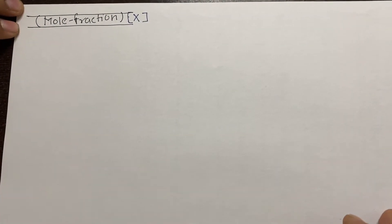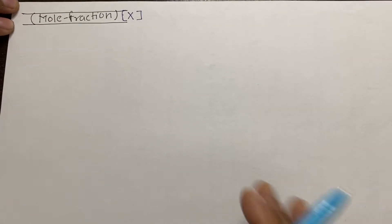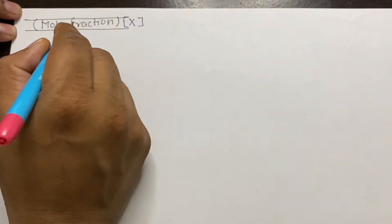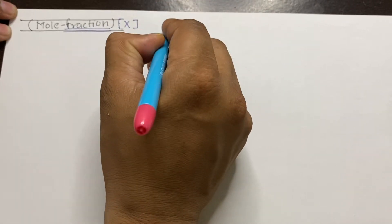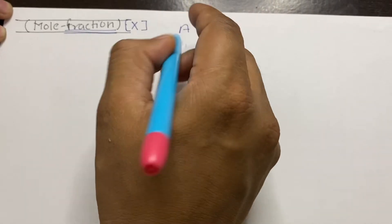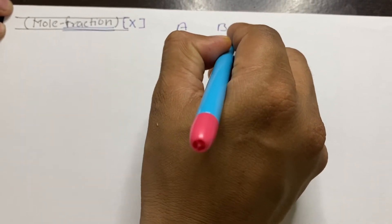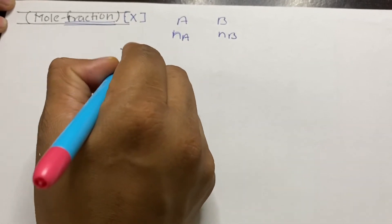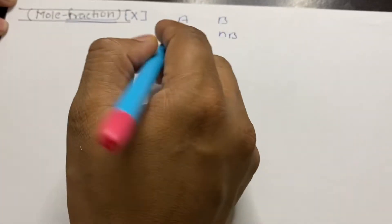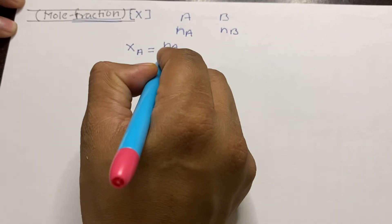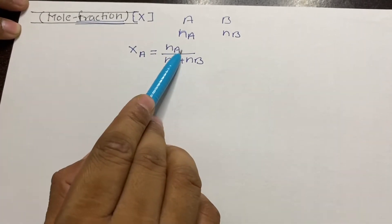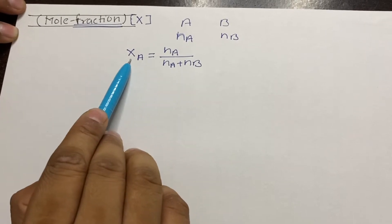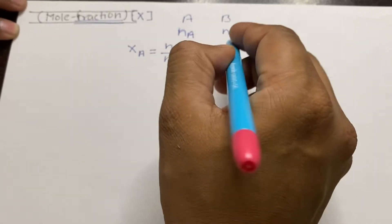In the last video we discussed molality and molarity. The next concentration term we are going to discuss is mole fraction. Suppose there are two components A and B, where moles of A are nA and moles of B are nB. The mole fraction of A, given by chi-A, is equal to moles of A divided by the total number of moles.